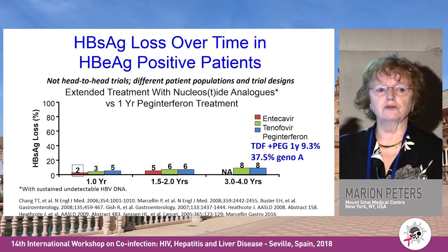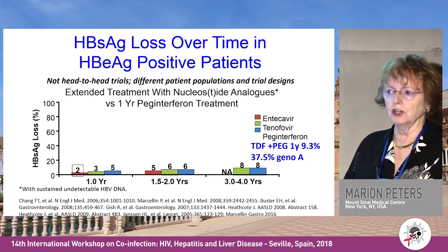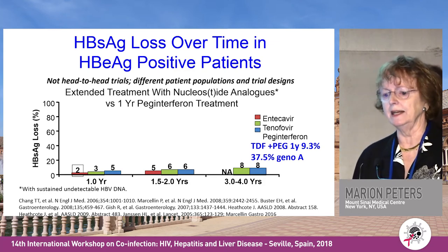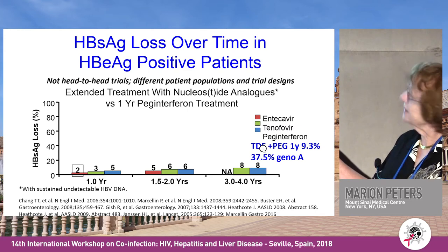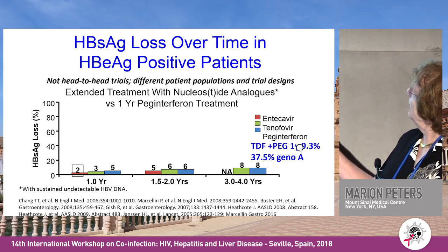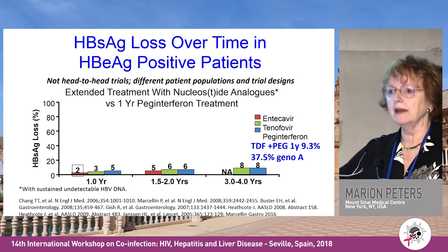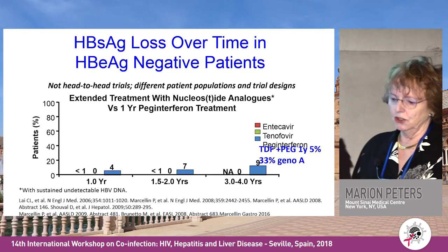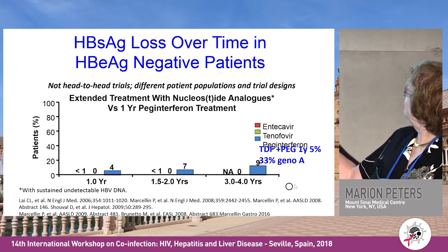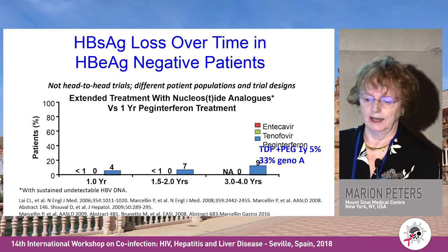Surface antigen loss is what you really want, and it's pretty lousy — we don't have great cures. We can control the virus and make HBV DNA undetectable, but we can't eradicate it. Data from last year showed tenofovir plus interferon achieved 10% loss of surface antigen, but caution: over a third of patients were genotype A, which responds best. In E antigen-negative patients it's even worse. Interferon is really the only drug that leads to surface antigen loss in antigen-negative patients.